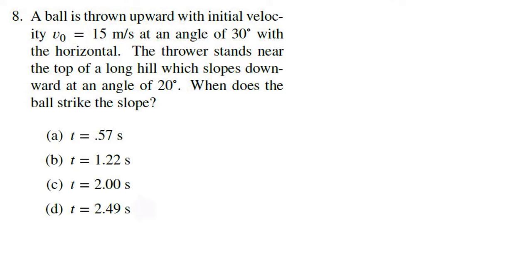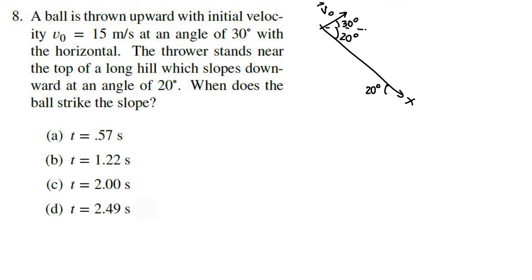Number 8 is a projectiles question. A ball is thrown upward with initial velocity V₀ = 15 m/s at an angle of 30° with the horizontal. The thrower stands near the top of a long hill sloping downward at 20°. When does the ball strike the incline? We draw a picture: the incline is at 20°, and relative to the incline, the initial velocity vector is at 50°. We take x along the incline and y perpendicular. Since they're only asking for time, we only need the y-direction equation.